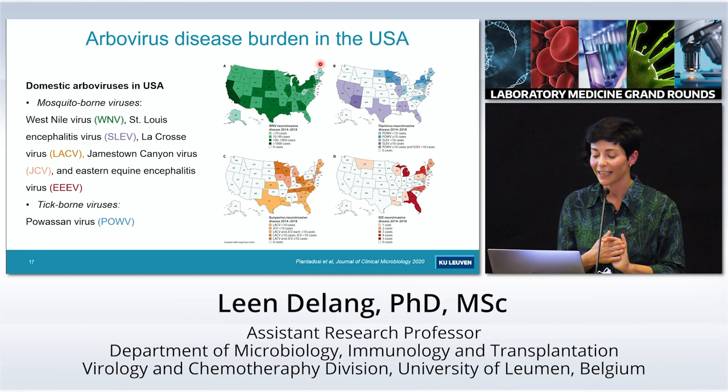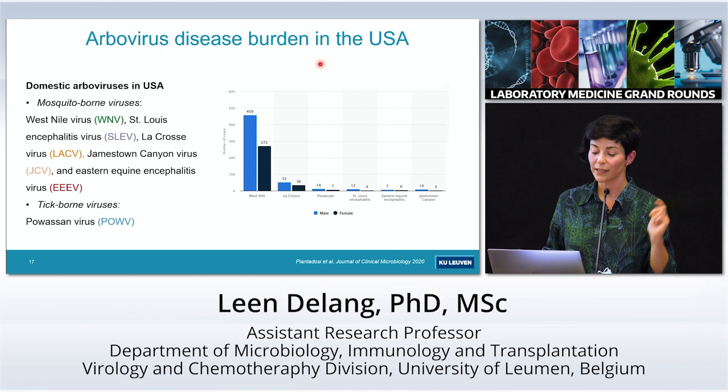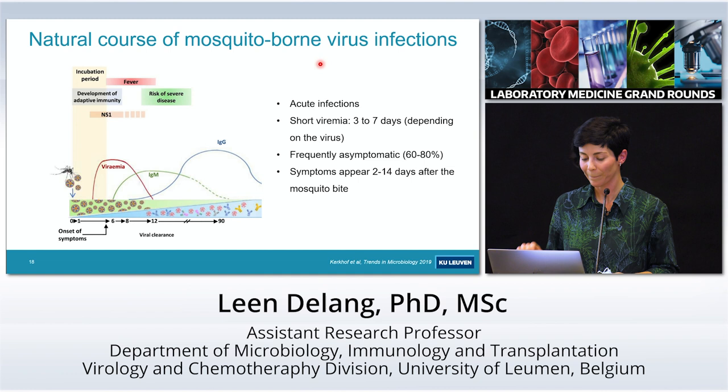Besides Eastern equine encephalitis virus, there are other mosquito-borne viruses in the United States. The one causing the most cases is West Nile virus, but there are others like St. Louis encephalitis virus, La Crosse virus, and Jamestown Canyon virus. There are also tick-borne viruses like the Powassan virus, which is also causing several cases every year in the United States.